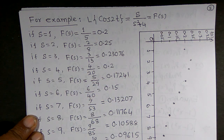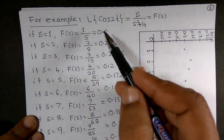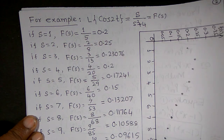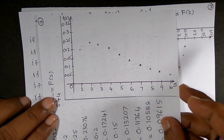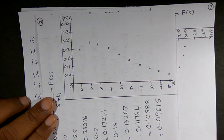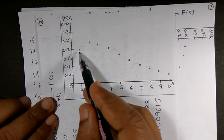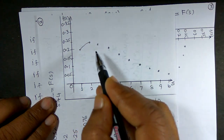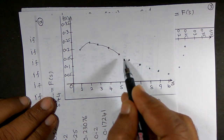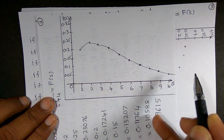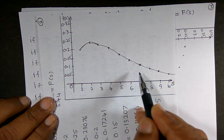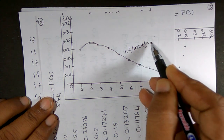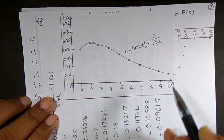So as s increases, observe that the value of the function decreases. When we draw the graph of all these values, we get a decreasing curve. With s = 1 giving 0.2, s = 2 giving 0.25, and so on — joining all these points gives the graph of L{cos 2t} = s/(s² + 4).